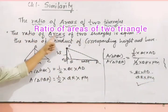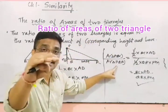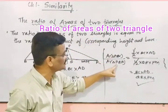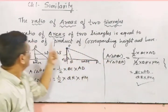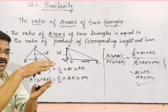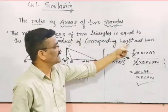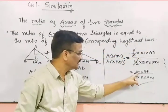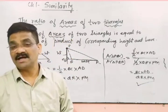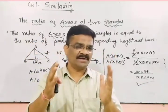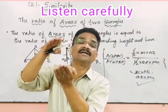So what? The ratio of areas of two triangles, this is area ka ratio, is equal to ratio of product. Product means multiply. Corresponding height and base. So base into height upon base into height.